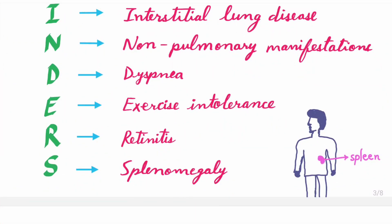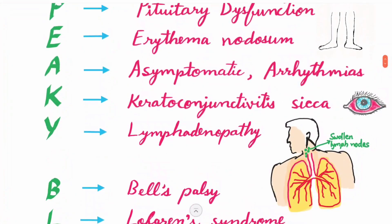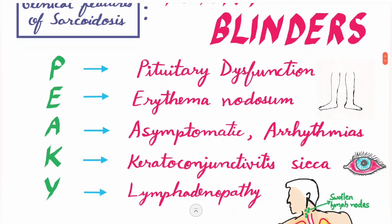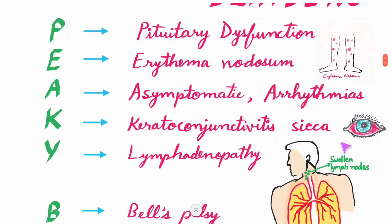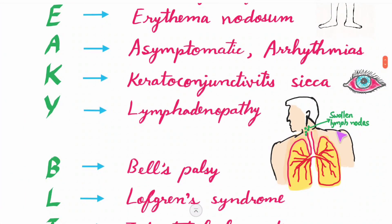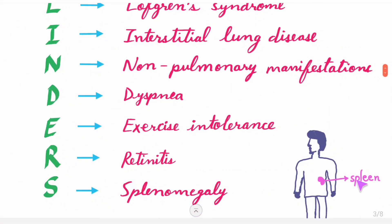You can see here a gif of erythema nodosum, keratoconjunctivitis sicca showing redness in the eyes, swollen lymph nodes, and splenomegaly.